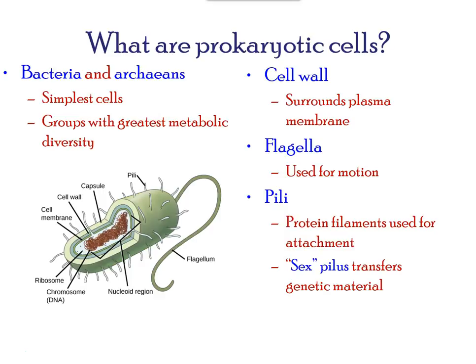A prokaryotic cell is a simple, single-celled (unicellular) organism that lacks a nucleus or any other membrane-bound organelles. The DNA of a prokaryotic cell is found in the central part of the cell in a darkened region called the nucleoid.